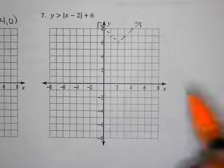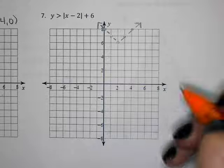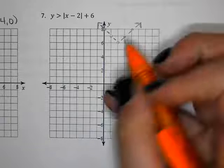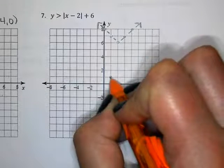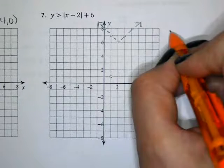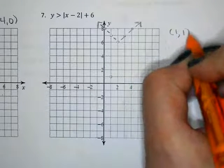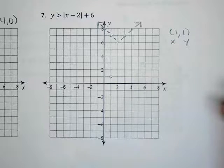If I wanted to plug in a point that's a little bit easier to plug in, I can pick any point I want. I'm going to go ahead and plug in one, one, just because that seems pretty easy and the numbers are small. So one for X, one for Y.